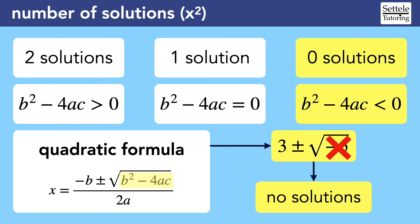Personally, I think that it's easier to memorize the discriminant formula if we know where it comes from, but the SAT will never explicitly ask you about this connection. Instead, they'll give you a variety of situations where you can use the discriminant to find the number of solutions. Let's look at a few examples.